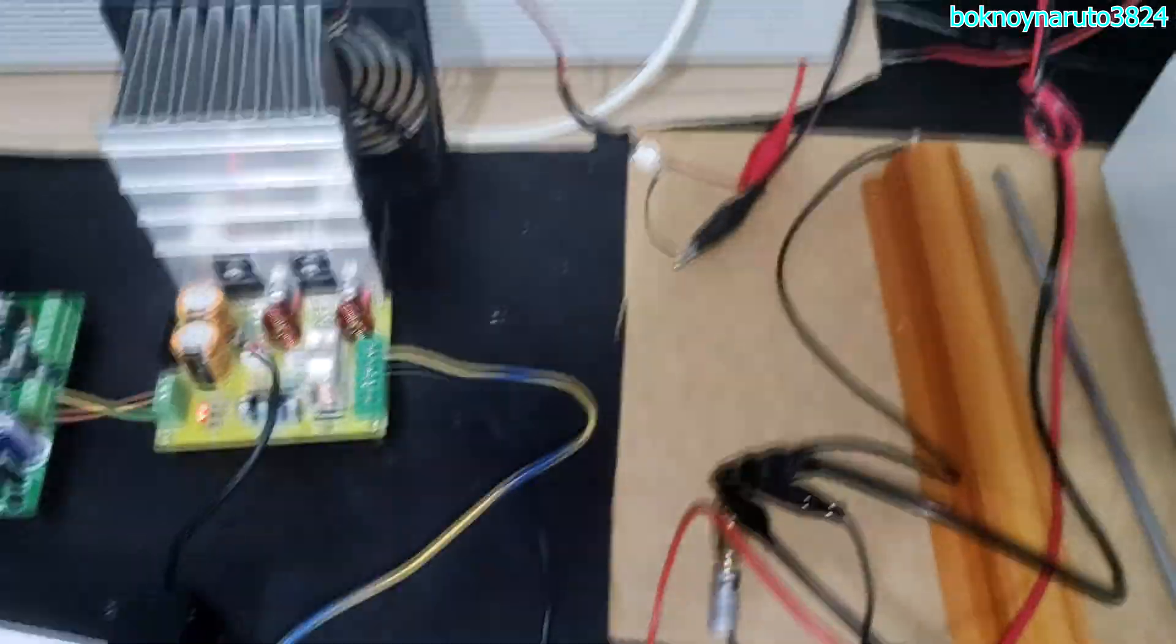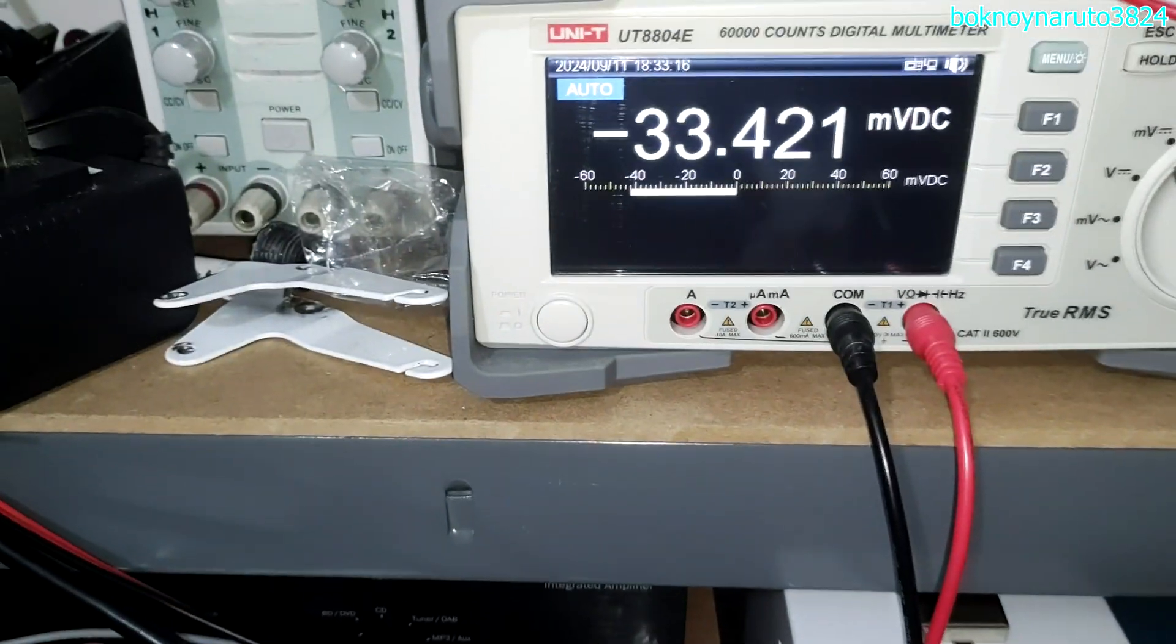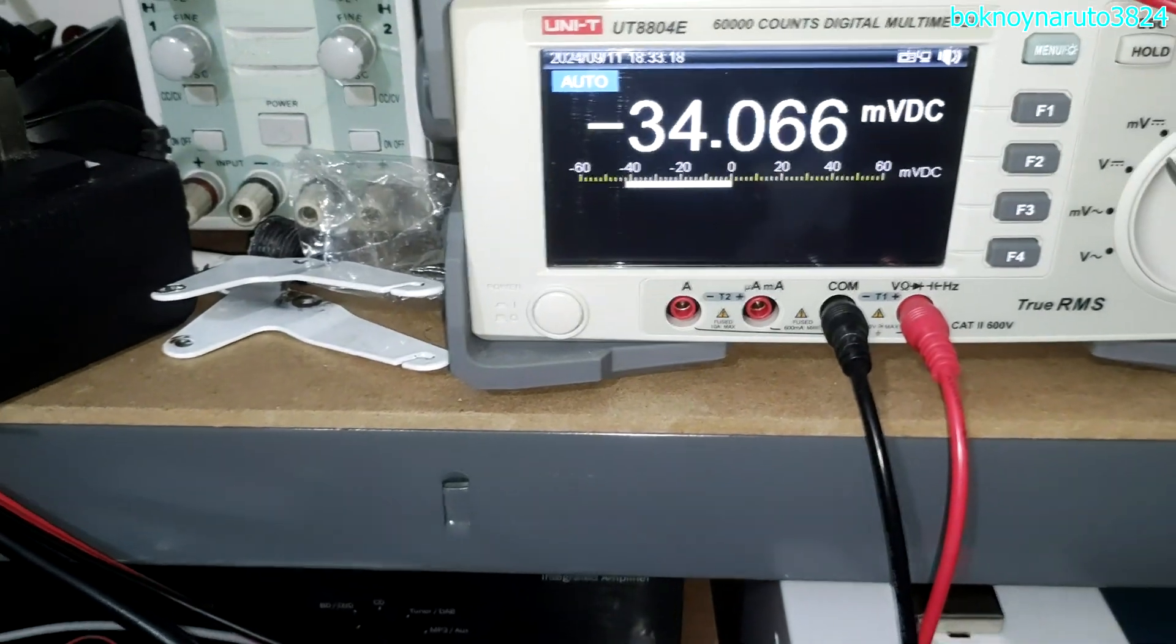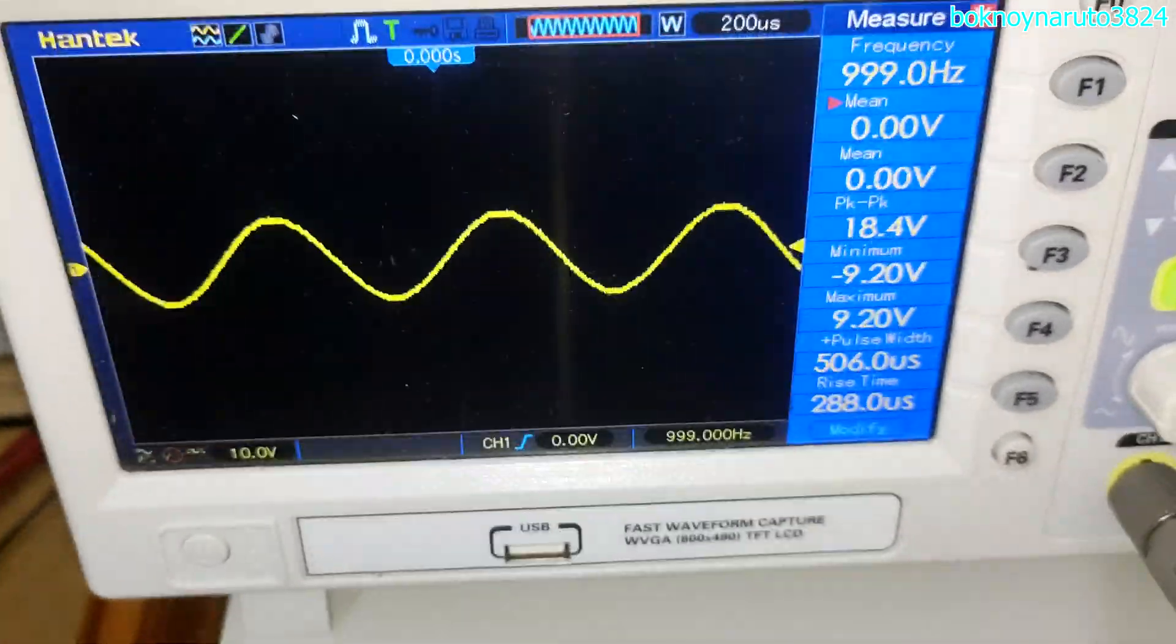I have the 6 ohms dummy load connected. This orange resistor here. This is our 6 ohms dummy load. And that is our DC offset, the DC output offset of the amp.